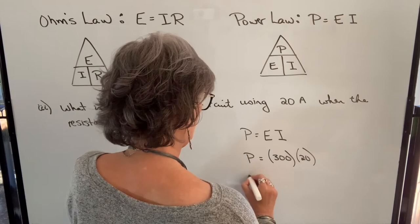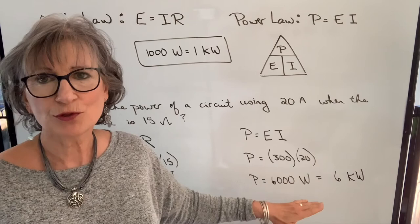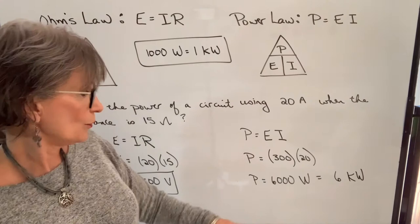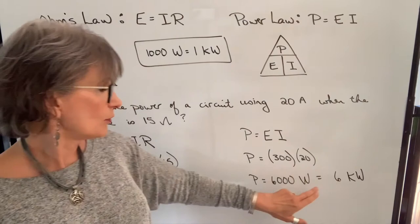When your numbers get larger, you can change from watts to kilowatts. Understanding that a thousand watts is equal to one kilowatt. A kilo anything is a thousand anything. So in order to change this to kilowatts, we would simply divide by a thousand. Six kilowatts is equivalent to 6,000 watts.